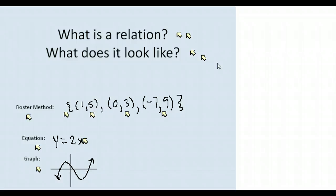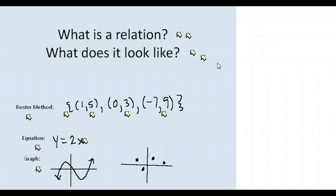A relation could also be represented on a graph as a set of points. Notice the difference between the two graph examples: one of them is continuous, meaning all the points are joined together by a line, or it could be discrete — where we have a set of five points and that is the entire relation. In the graph where the line continues forever, we have an infinite number of points. The discrete one can easily be represented using the roster method, but the continuous one would have to be represented using an equation.